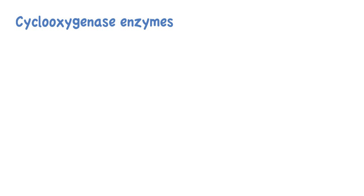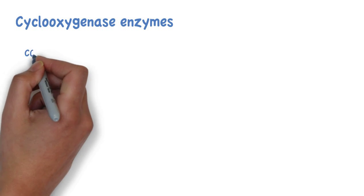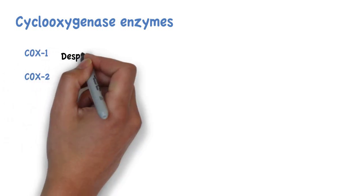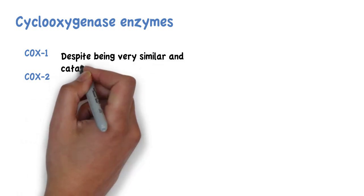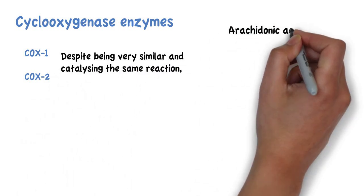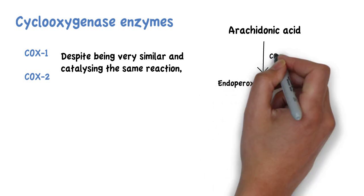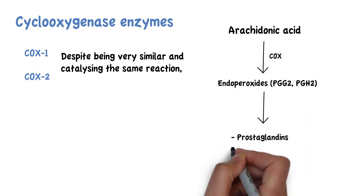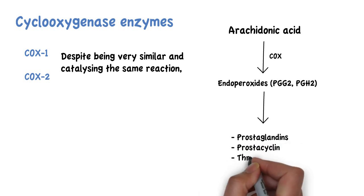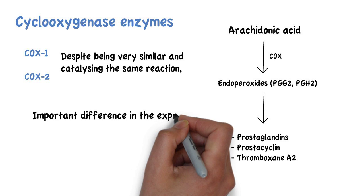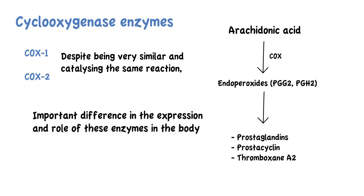There are two main isoforms of cyclooxygenase enzymes, these being COX-1 and COX-2. Despite being very similar and catalyzing the same reaction — which is the conversion of arachidonic acid to endoperoxides, which will then be converted to prostaglandins, prostacyclin and thromboxane A2 — there is an important difference in the expression and role of these enzymes in the body.